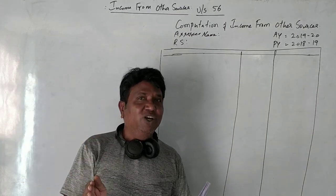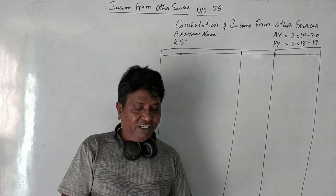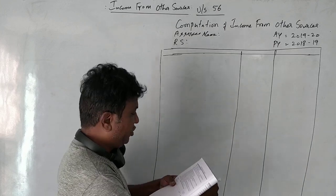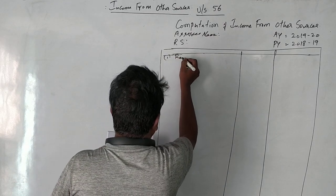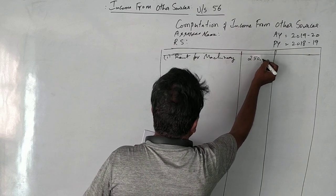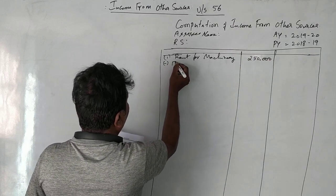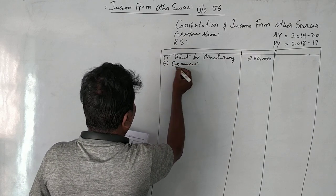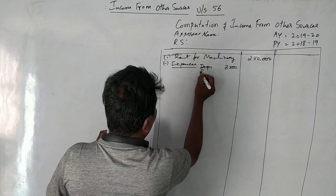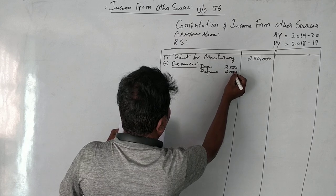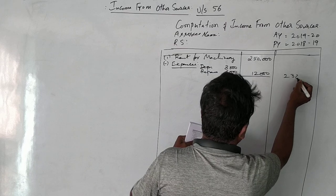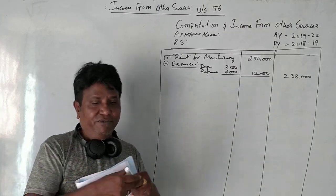We are charging rent from the machinery, which is ₹2,50,000. Therefore, rent for machinery is ₹2,50,000. I incurred certain expenses for this machine: depreciation ₹8,000 and repairs ₹4,000, totalling ₹12,000 expenses. Thereby, ₹2,38,000 is my net income from the machinery which is taxable.